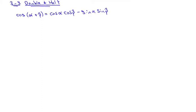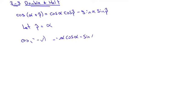What I want to do to this formula today is manipulate it a little bit. What would happen if I let beta equal alpha? In other words, what if the two angles we're talking about, alpha and beta, were exactly the same? Well, then that would become cosine of alpha plus alpha equals cosine of alpha times cosine of alpha, minus sine of alpha times sine of alpha.